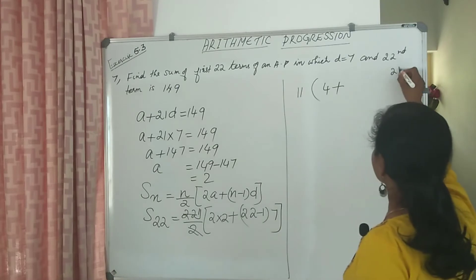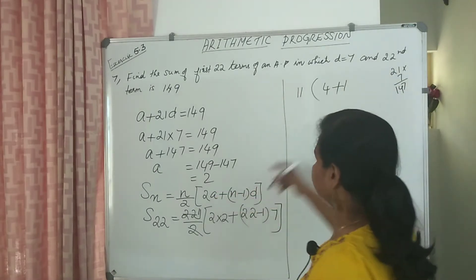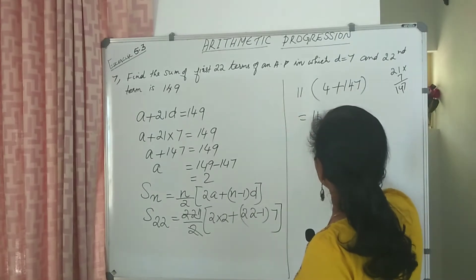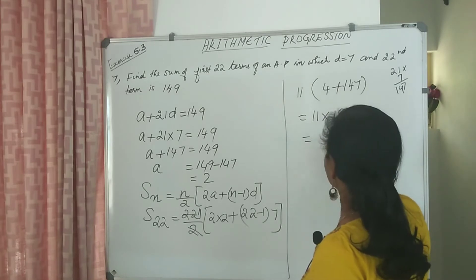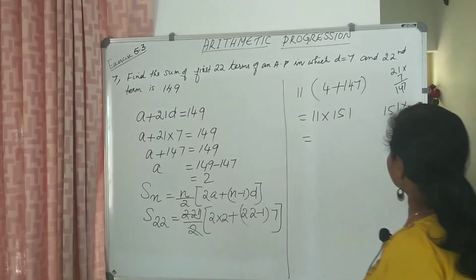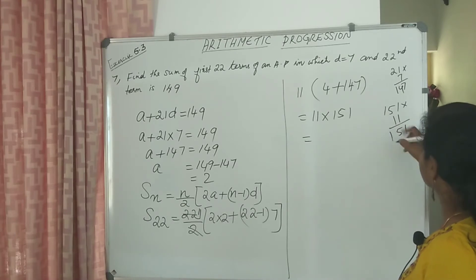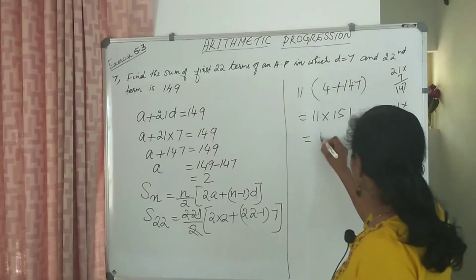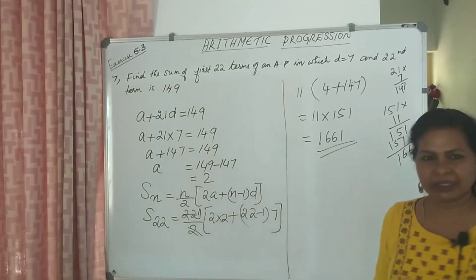21 into 7 is 147. That is 11 into 151. Into 11. That is 1661. So the sum is 1661. This is a simple question.